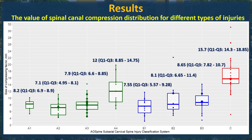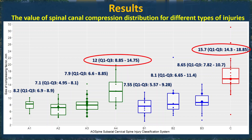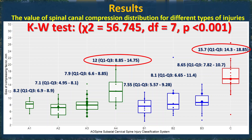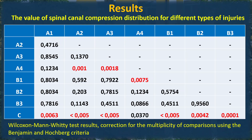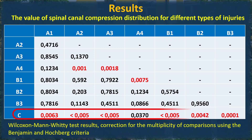When assessing the dependence of vertebral canal compression size on the type of injury, the highest compression is seen in groups A4 and C. According to the Kruskal-Wallis test, the difference is statistically significant. Post-hoc analysis with correction for multiplicity of comparisons shows that almost only type C statistically differs from other types.